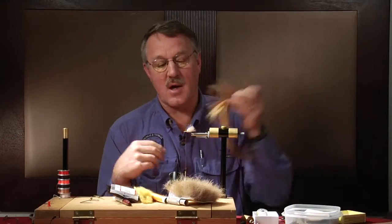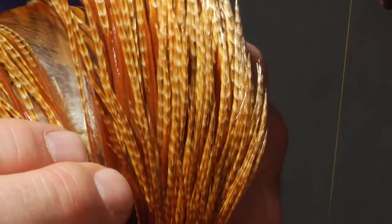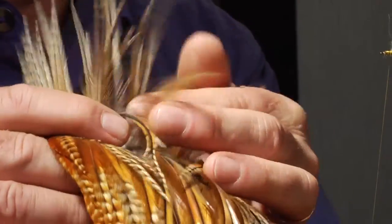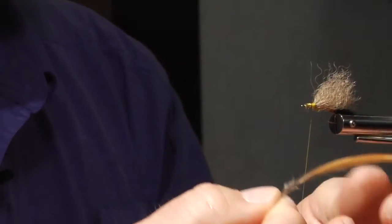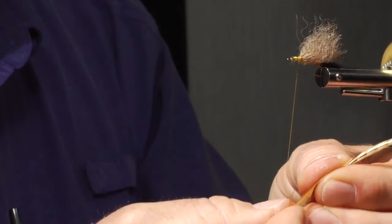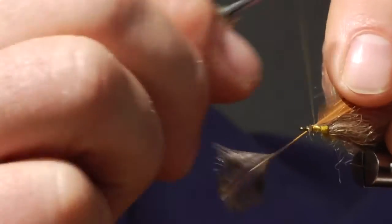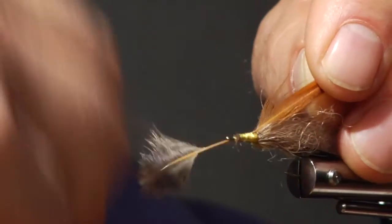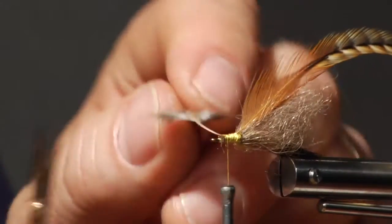Next is the hackle. And this is a barred ginger hackle. And I'm just going to select a hackle from this. I'll just take a little bit of the fuzzy stuff off. Tie this on. And trim it.